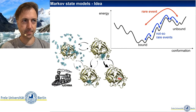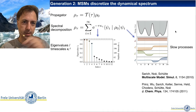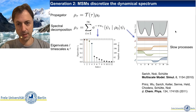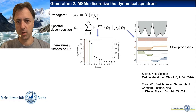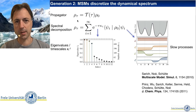Instead of thinking of a trajectory as a time series that stochastically jumps around in state space, you can think about the statistics of the system. Simulation trajectories evolve in time, and if you think about an ensemble of molecules, at any time they follow some probability distribution — call it rho_0. We can think about this ensemble changing its probability distribution towards its equilibrium distribution, modeled by a linear operator T(tau), the transfer operator.